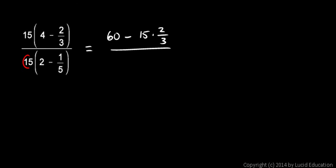Okay, now let's do the bottom. 15 times 2 right there is 30. And then 15 times 1 fifth. And don't forget that minus sign. So it's minus 15 times 1 fifth.